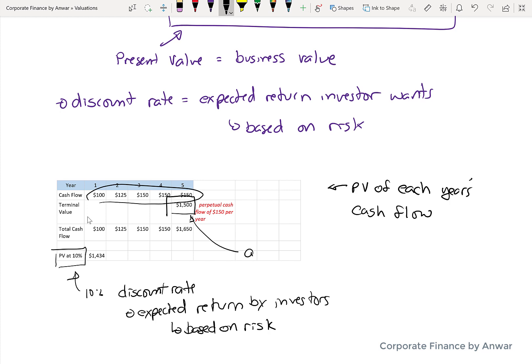Now the question is, how do you get the terminal value, the value after five years? In this case, I've made a simple assumption. I assumed it's going to be a perpetuity after. So it's sort of flattened out at $150 in year five. I'm going to assume it's $150 forever after that.